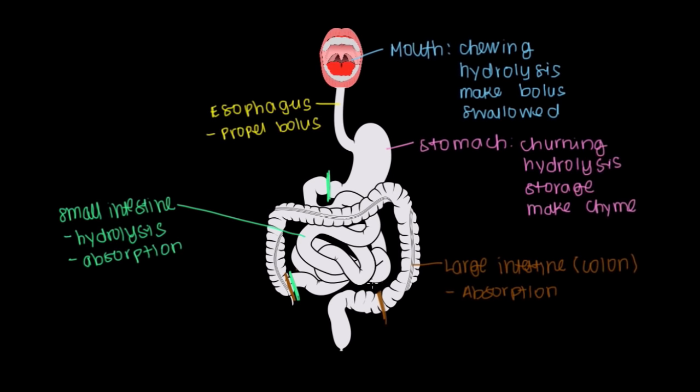And then after that, we're going to pass food on to this structure here, and this is called the rectum. Kind of like the stomach of the GI tract, the rectum serves for storage. We hold on to our processed food, and it's held there until we deem it an appropriate time to expel it. And when it's time to expel the food, it'll come out through the anus through expulsion.